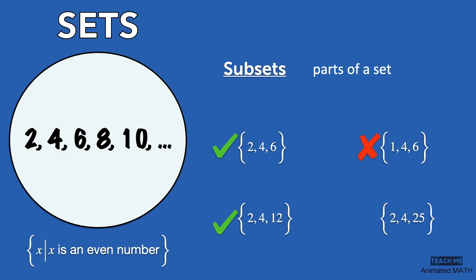2, 4, and 25 is not a subset because 25 is odd.